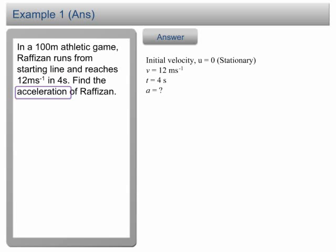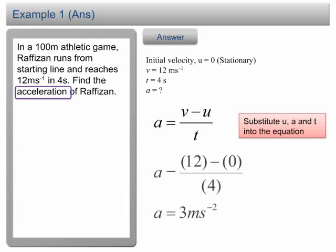The mathematical formula of acceleration is a equals v minus u over t. Plug in u, v, and t into the equation. The acceleration is equal to 3 meter per second per second.